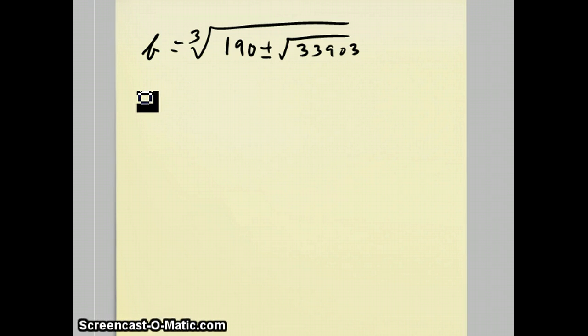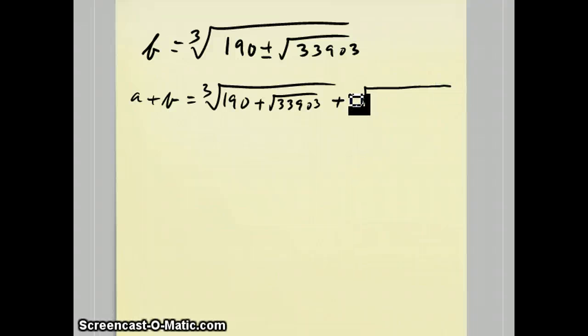So that the answer to this question, when you add a plus b is going to be the cube root of 190 plus the square root of 33,903, plus the cube root of 190 minus the square root of 33,903.